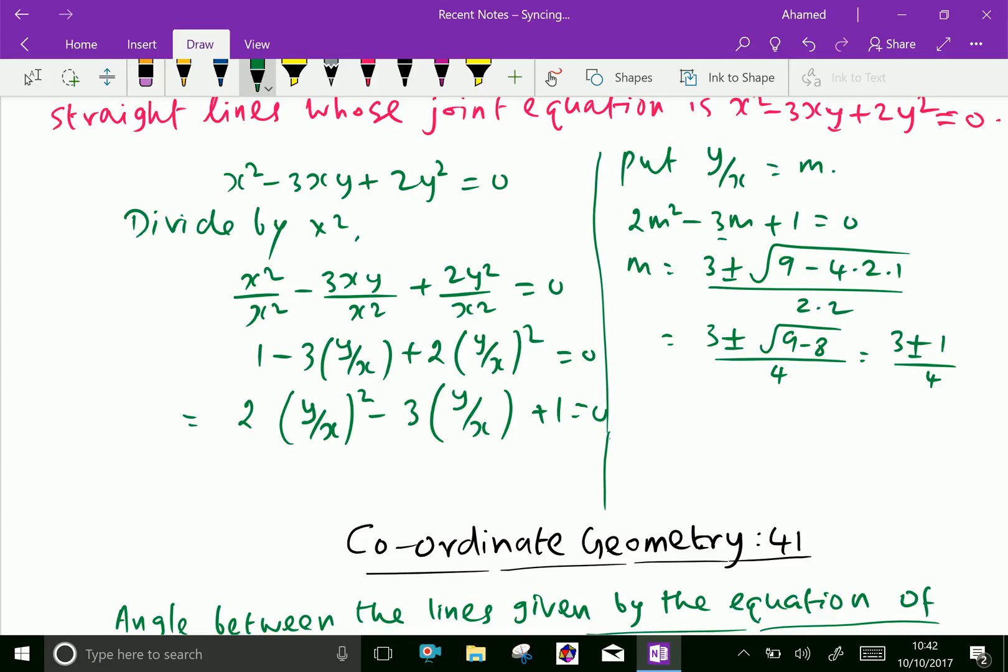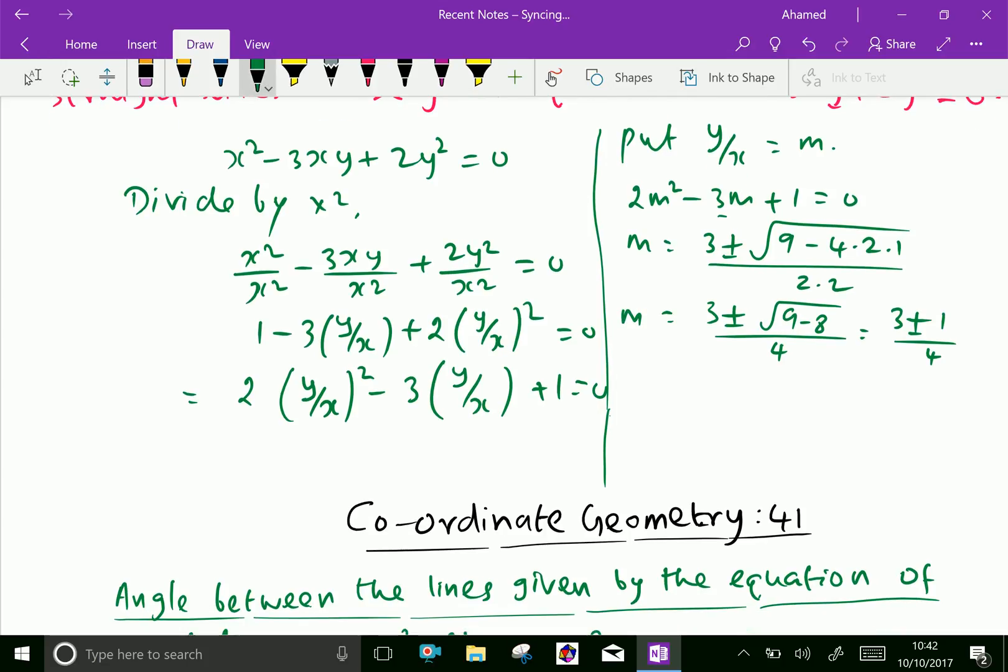Now, this is m, therefore we get value of m equal 3 plus 1 by 4, that is 4 by 4 is 1, and 3 minus 1 by 4 is 2 by 4 is half.